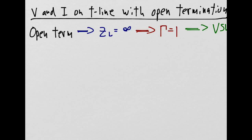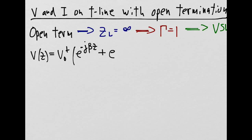Let's now write an expression for the voltage at point z. Since gamma is equal to 1, we have the following expression, which can be simplified to a cosine function.